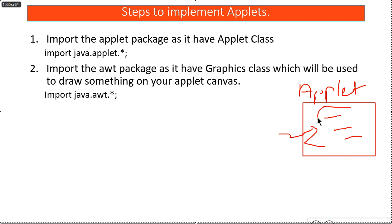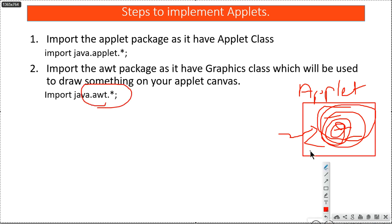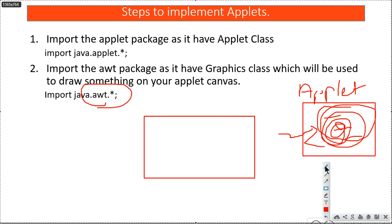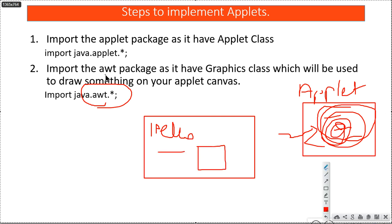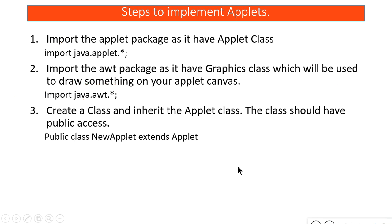If you want to write something in your applet window or canvas, you will need the AWT package. In short, the applet package provides the canvas, whereas the AWT package provides the tools — to show a message, draw a line, draw a square. So to create applets you need to import both these statements.